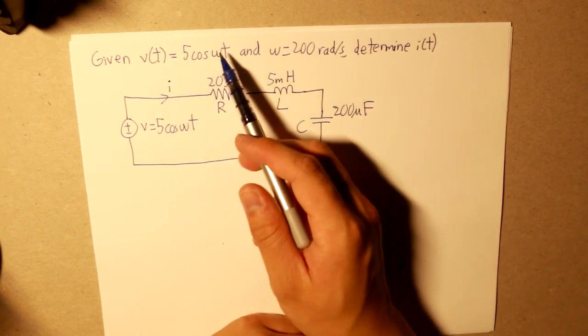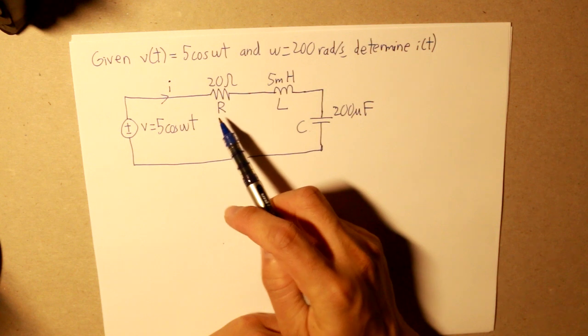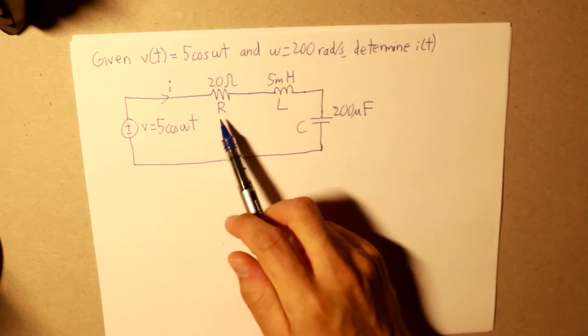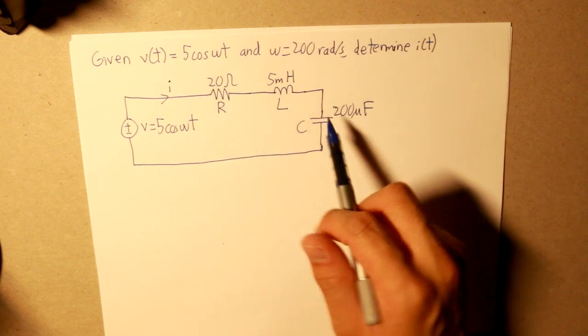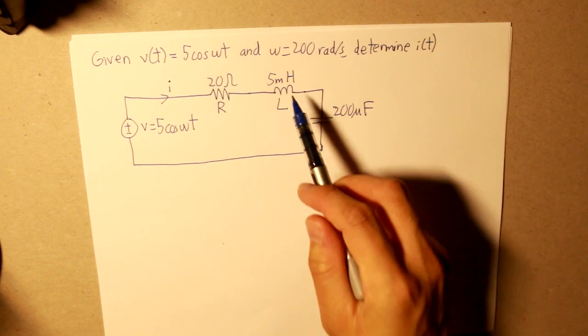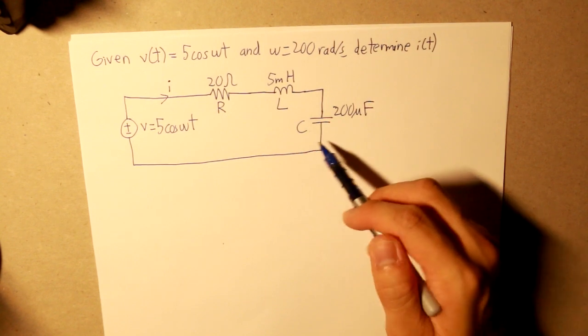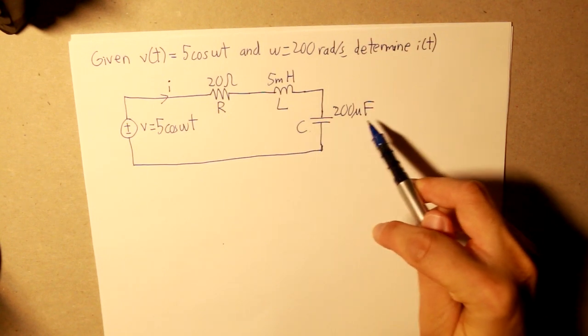So the current is flowing through the circuit. We have the voltage source given what we have, and then we have three circuit elements: a resistor, an inductor, and a capacitor. So R is 20 ohms, the inductor is 5 milliH, and the capacitor is 200 microfarads.